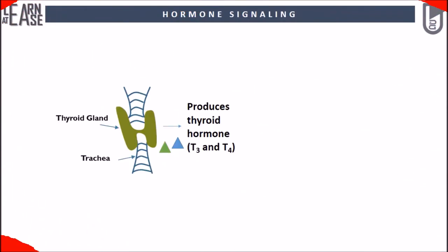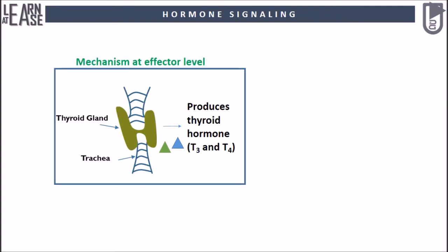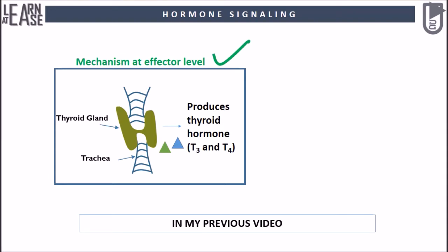In my previous videos I have discussed the production of triiodothyronine and tetraiodothyronine, that is T3 and T4 respectively, from the thyroid gland. If you want to know more about the production of T3 and T4, go to my previous video and you would find its link in the description.